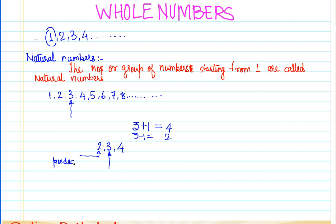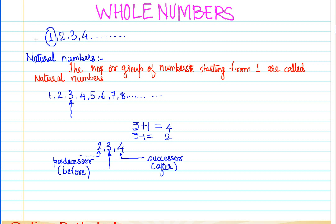The number two, which comes before three and is obtained by subtracting one, is called the predecessor. Predecessor simply means the number which comes before a given number. The number four, which comes after three and is obtained by adding one, is called the successor. Successor simply means what comes after. So: predecessor comes before, successor comes after.